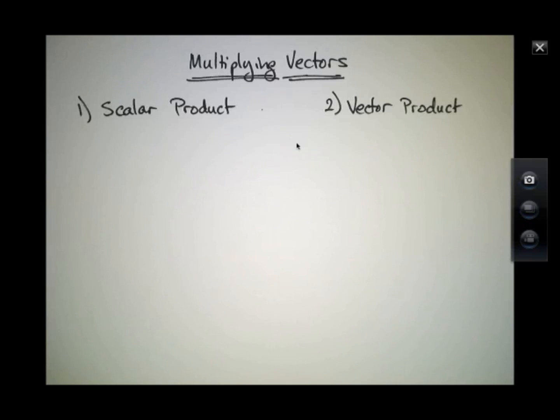We've talked about vector addition, but not yet about vector multiplication. Multiplying vectors is a little bit more complicated because vectors have both a magnitude and a direction.